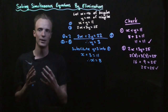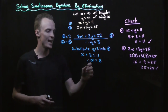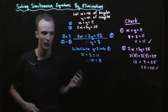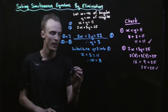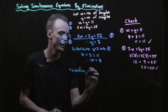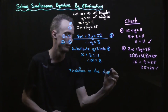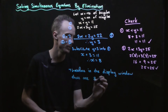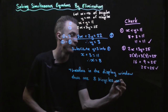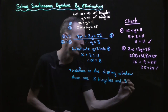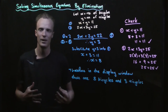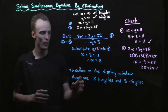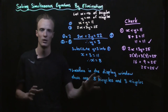Now we interpret that solution back into the problem. Our x represents the number of bicycles and our y represents the number of tricycles. So therefore in the display window there are eight bicycles and three tricycles. If you've been following along these videos you'll know that we've already found that solution to be correct.